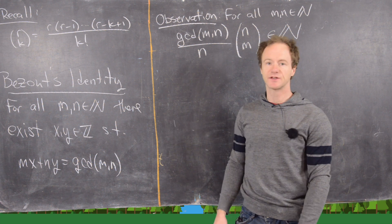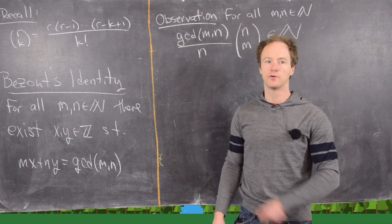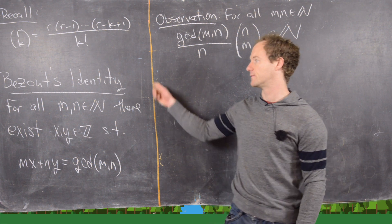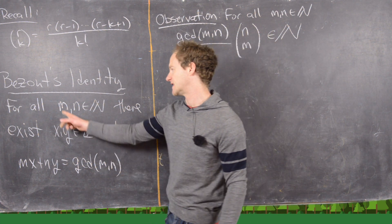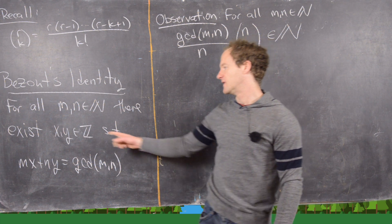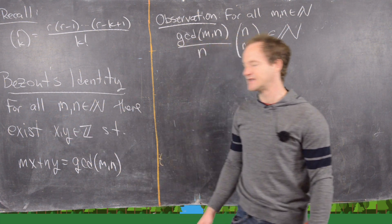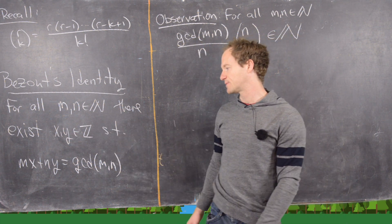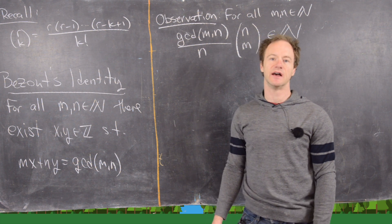And then there's also this other fact which we won't prove, but I've got a video where I prove it called Bezou's Identity, which says that for all m and n which are natural numbers, there exist x and y which are integers such that mx plus ny equals the GCD of m and n.